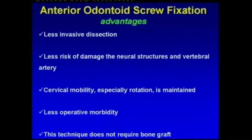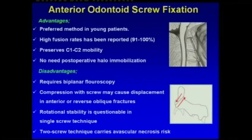Anterior odontoid screw fixation has some advantages such as less invasive dissection, less operative morbidity, and less risk of damage to the neural structures and vertebral artery. It is the preferred method in young patients, and a high fusion rate of 91 to 100% has been reported.